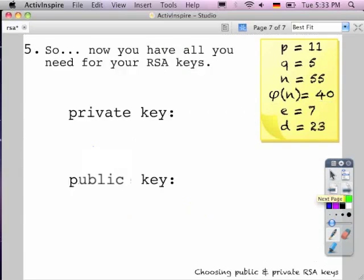And now we have everything that we need to list out our RSA keys. For this we have the RSA modulus which is n, we have e and we have d. And so for our private key, the key is going to be d and then the RSA modulus n. And so that will be 23, 55.